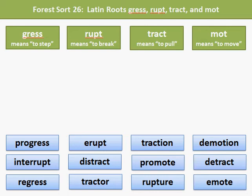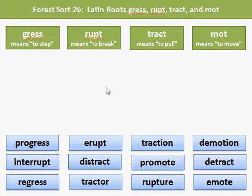ForestSort 26 focuses on the Latin roots gress, rupt, tract, and mote. We'll take a look at those four roots' meanings first. Gress means to step, rupt means to break, tract means to pull, and mote means to move.